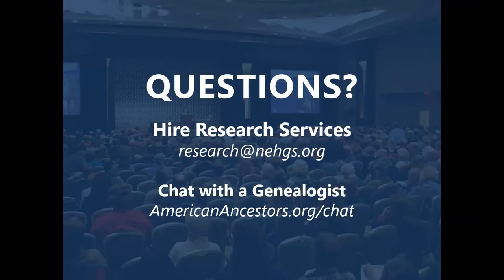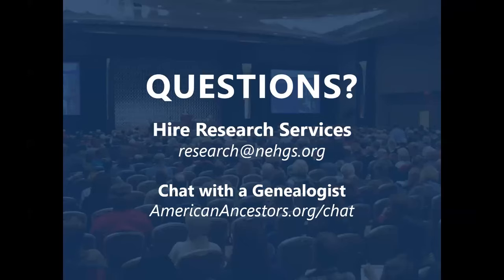And where do you typically find these gazetteers? Are they at libraries, archives, historical societies, map centers? All of the above — those institutions will probably have at least one type of gazetteer for that specific area. If you like using the internet to locate digital books, there are a lot of them available online. Your favorite digital book website — be it Google Books, HathiTrust, the FamilySearch Digital Library, or Archive.org — will definitely have some gazetteers.